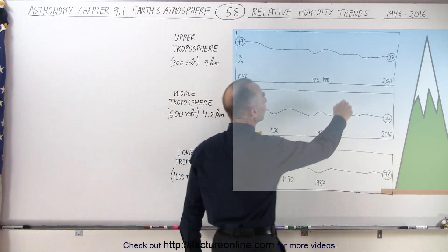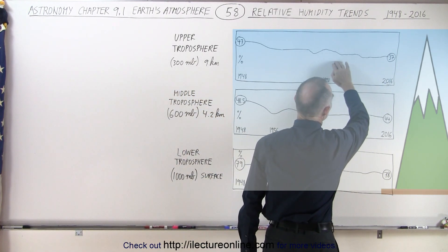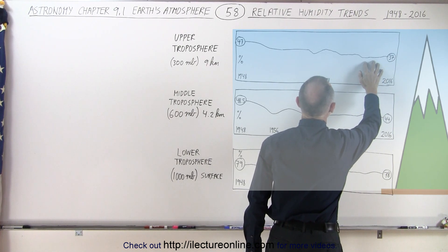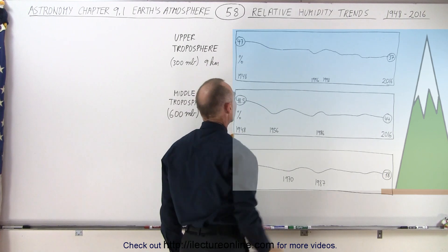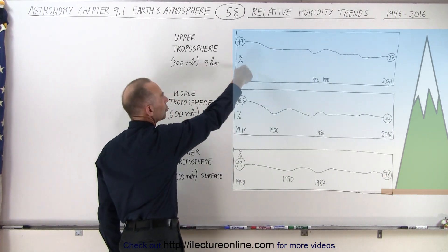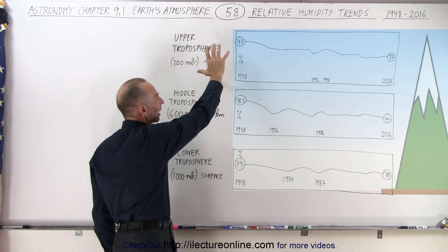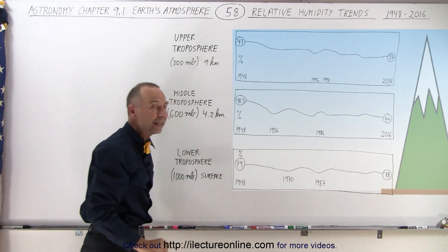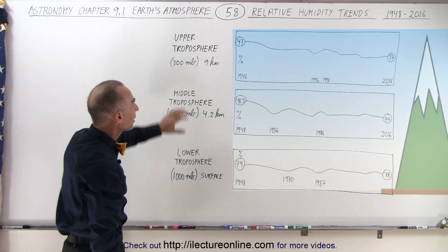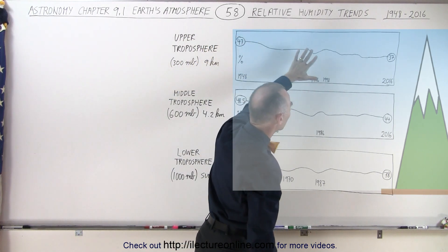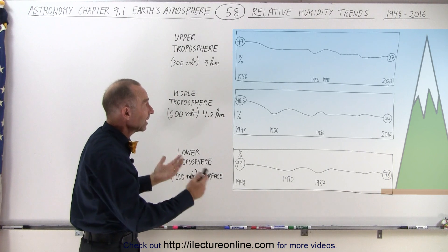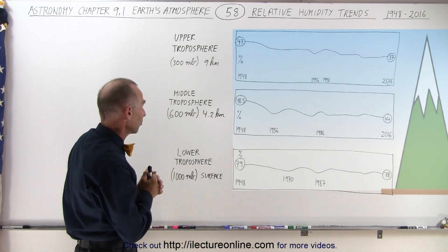Now it's true that over the last 20 years or so, there hasn't been much of a change in the relative humidity in the upper troposphere, but the drop was pretty big in the very beginning. That may have something to do with the fact that in the 1930s and 1940s, the temperature was pretty high over the North American continent, which may have contributed to these measurements. But what we can see here is that there's not really any significant increase of moisture stored in the upper troposphere.